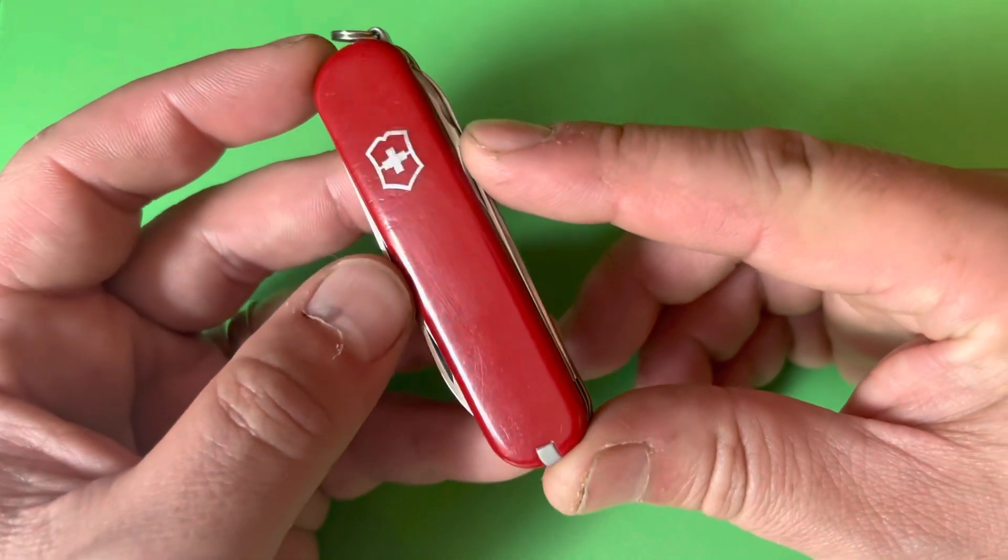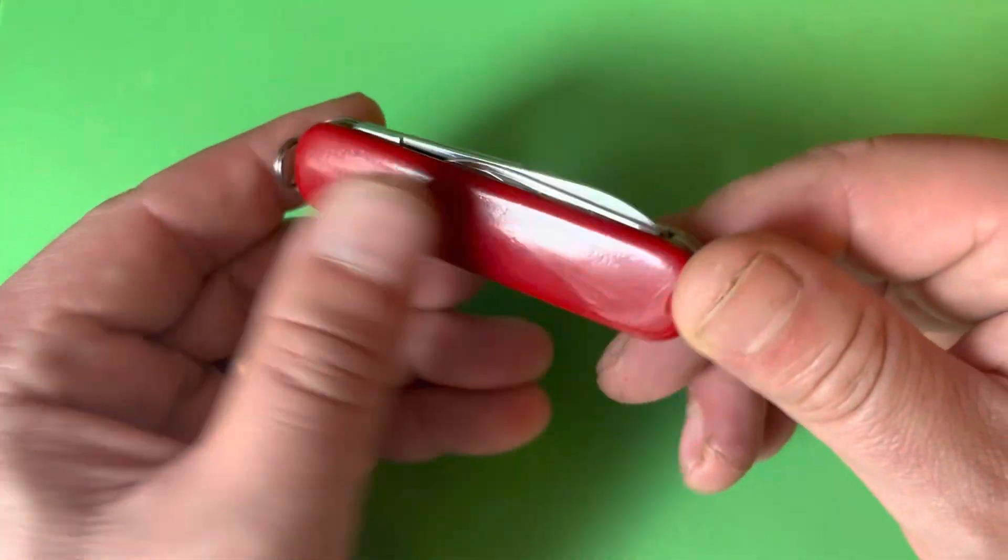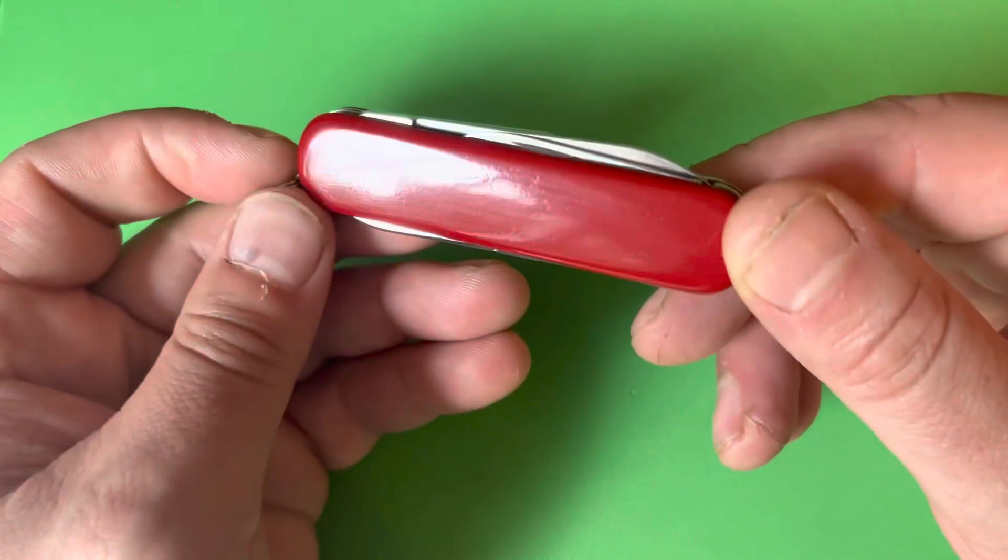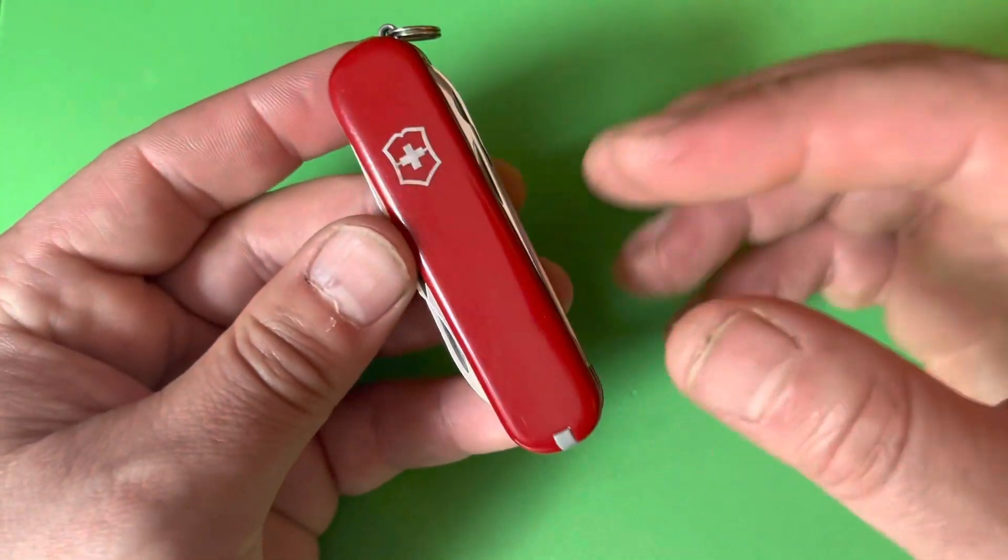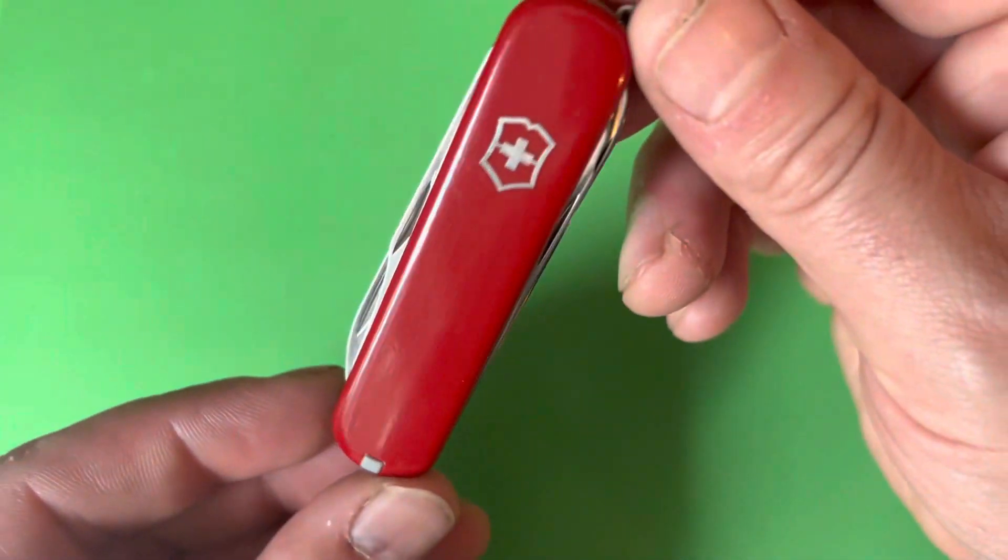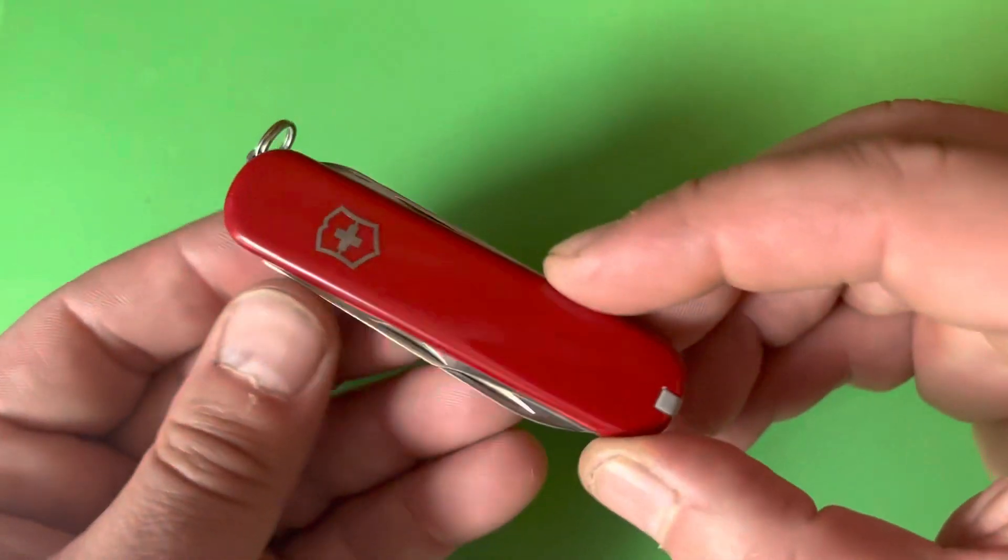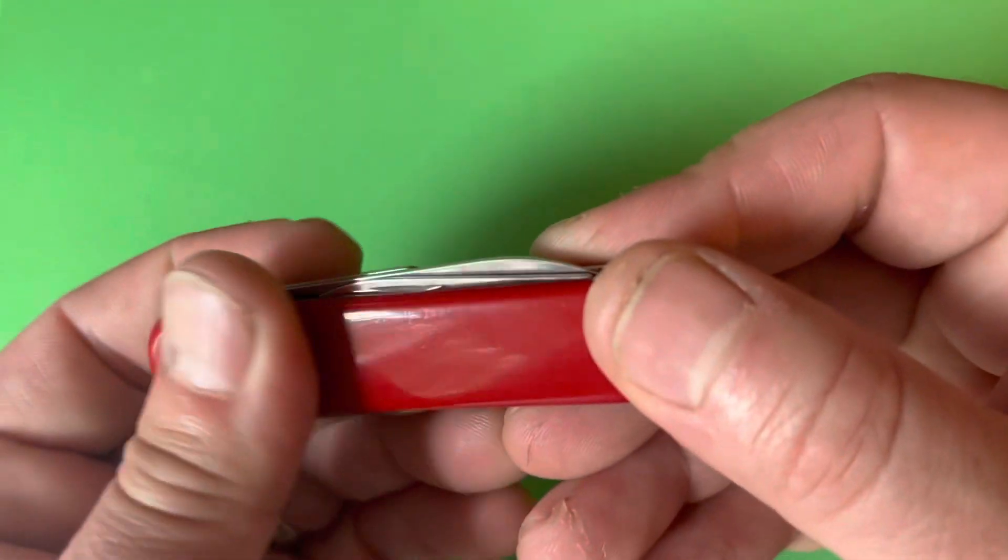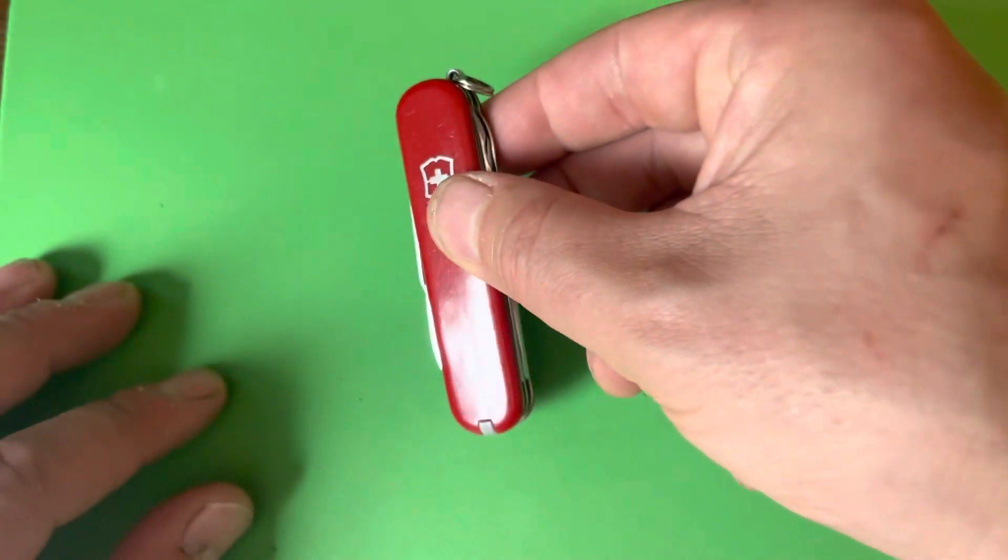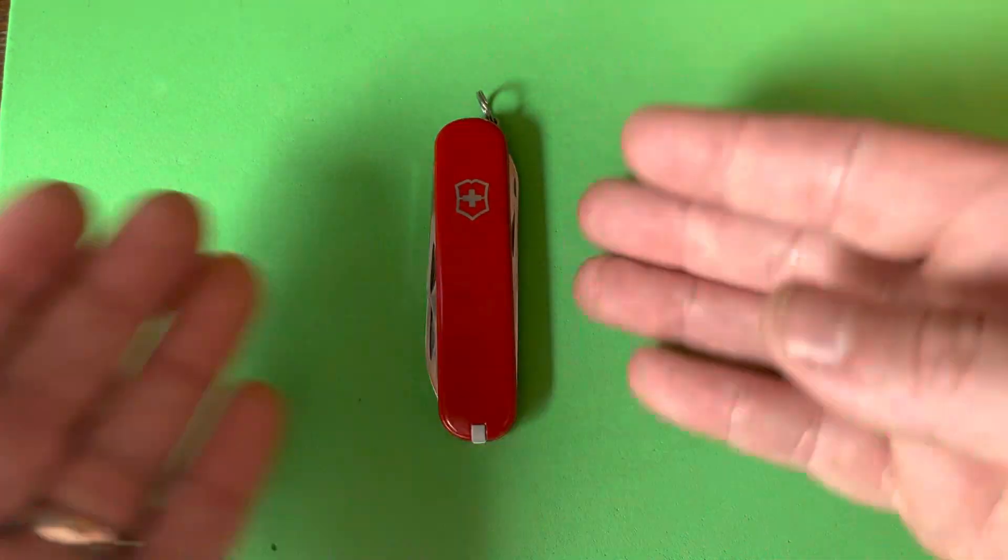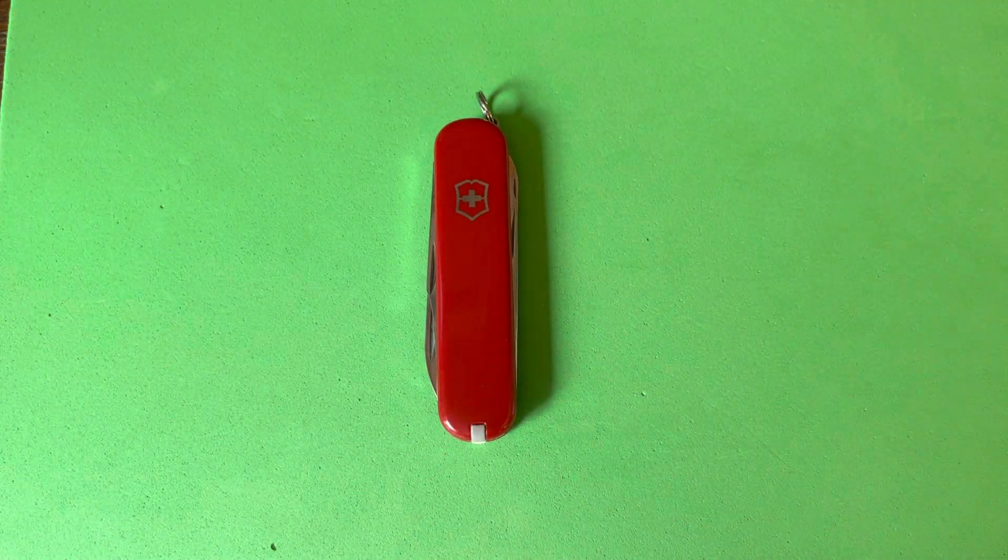As you can see, it's used - it's got some divots and scratches on the scales. I polished this thing up and cleaned it, so it was much dirtier and worse than this. Now it is shining, which is fantastic. I love cleaning up these old vintage models from the 80s or 70s.